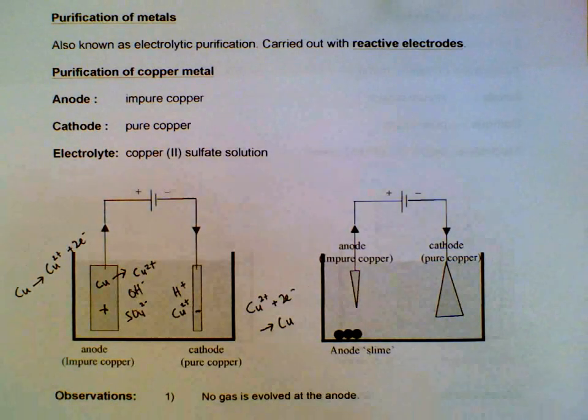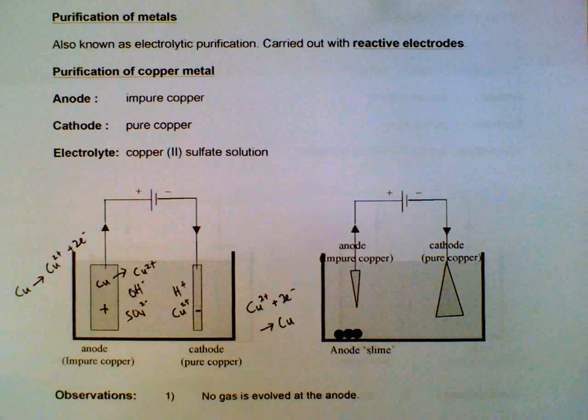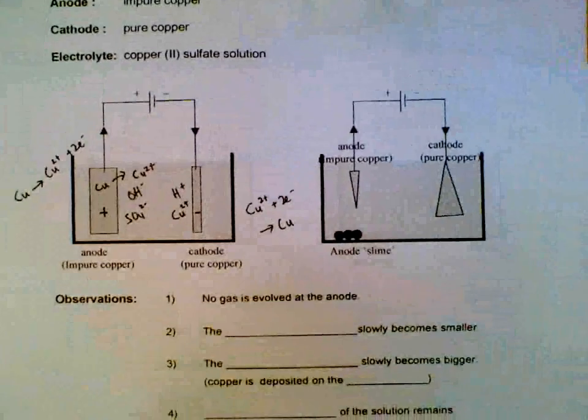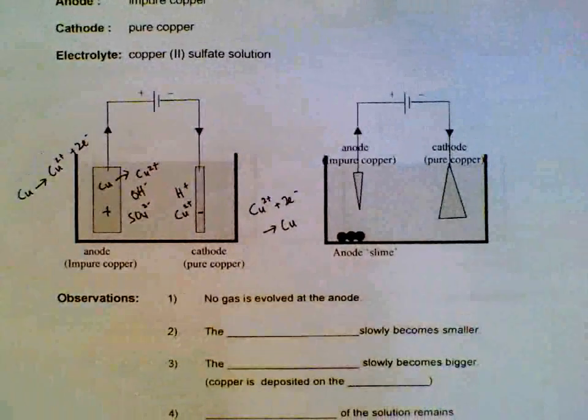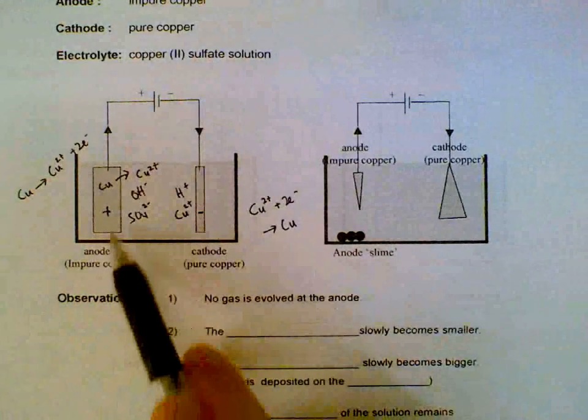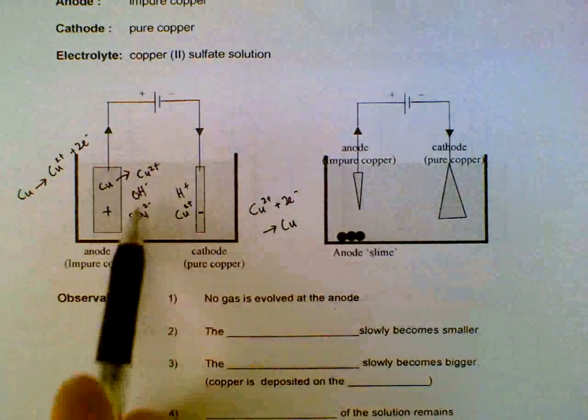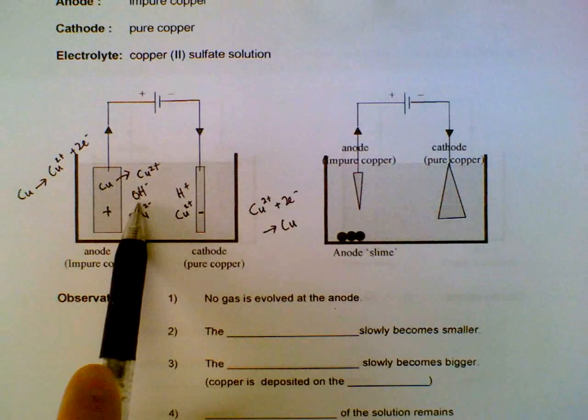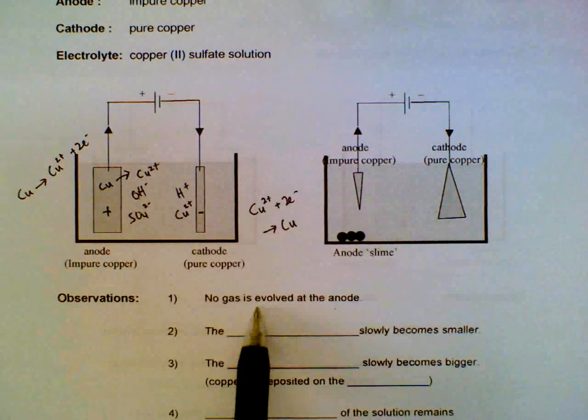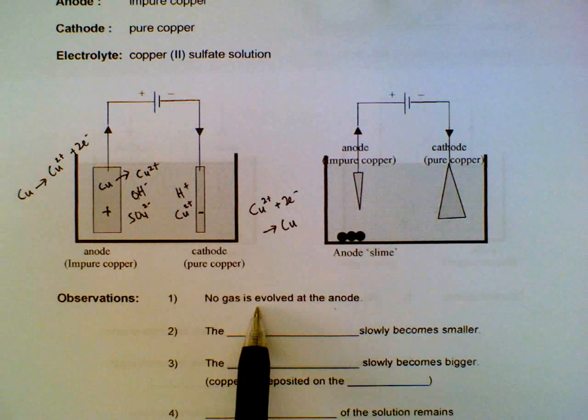So let's see what are the observations we can have for this setup. First of all at the anode, since we do not discharge hydroxides to form oxygen gas, there's no gas evolved at the anode, as compared to the one if we use inert electrodes.